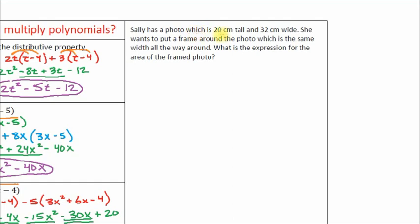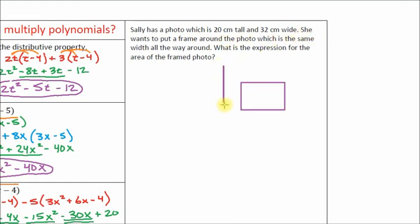A couple of things I want to note here. We have a photo — it's got height and width. I would recommend you go ahead and make a diagram. Let's make this one relatively big because I'm going to label some things for you. I'm going to make a photo here, and then she wants to put a frame around the photo which is the same width all the way around. Let's go ahead and put a big frame around this photo.